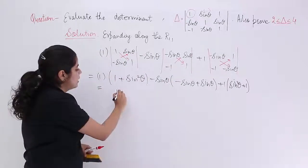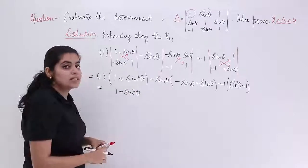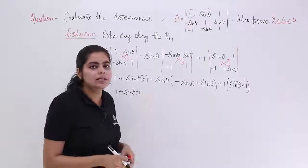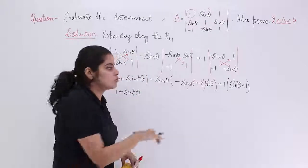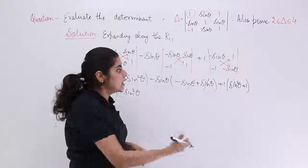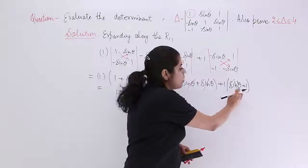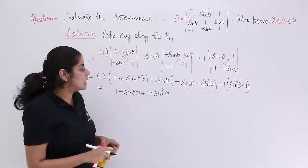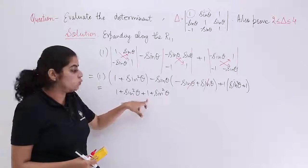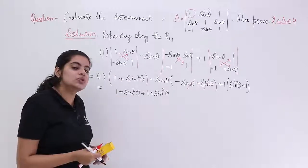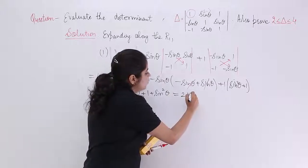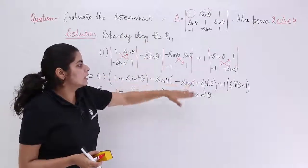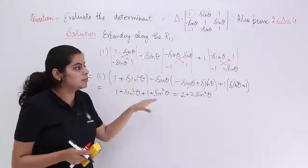Looking at what can be simplified: we have 1 + sin²θ from the first term. Outside was 1, so it stays. In the second term, −sin theta + sin theta cancel to give 0, and 0 times anything is 0. The third gives 1 + sin²θ. Adding them: (1 + sin²θ) + 0 + (1 + sin²θ) = 2 + 2sin²θ. The answer to the evaluation is 2 + 2sin²θ.